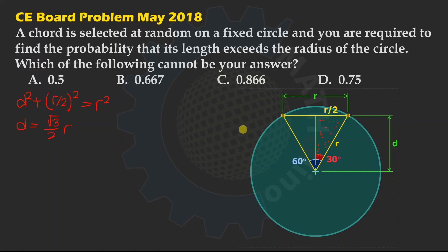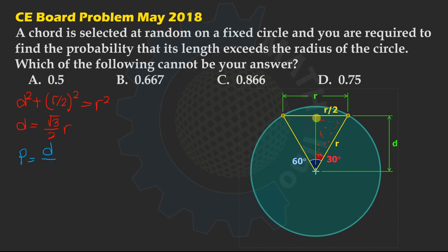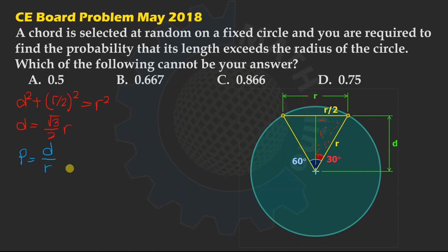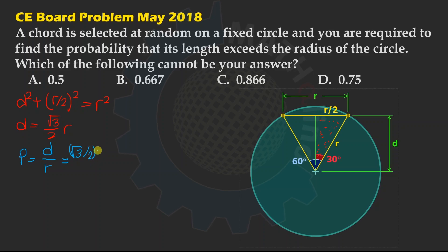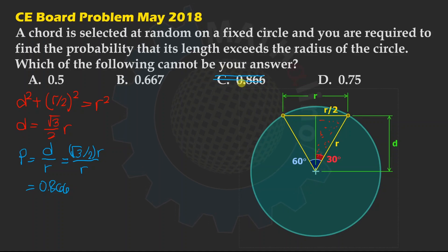What is the probability for assumption number 1? The probability equals the number of favorable ways over the total number of ways: D over R. So the probability is (√3/2)R divided by R, which equals √3/2 ≈ 0.866. This means we eliminate option C (0.866) because this can be an answer to the probability. We are looking for a quantity which cannot be an answer to this probability.